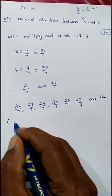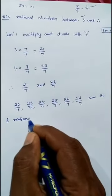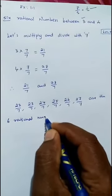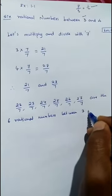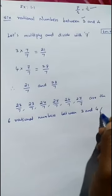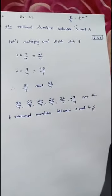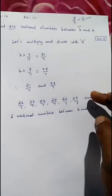...six rational numbers between 3 and 4. Hope that you understand this. But this question, we can do it...